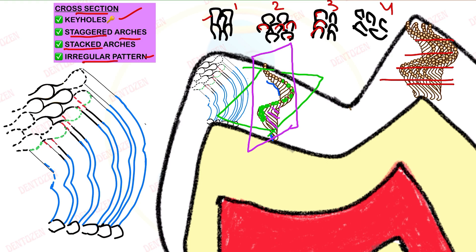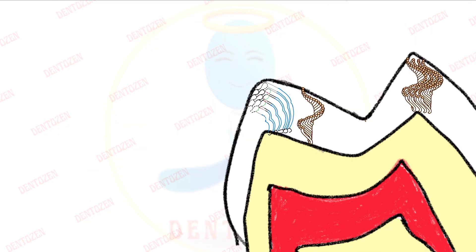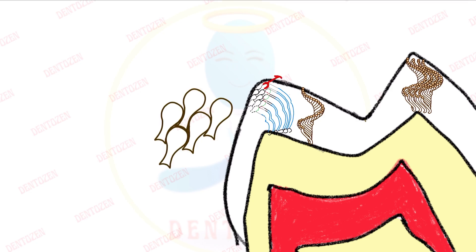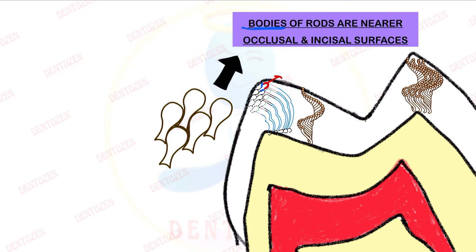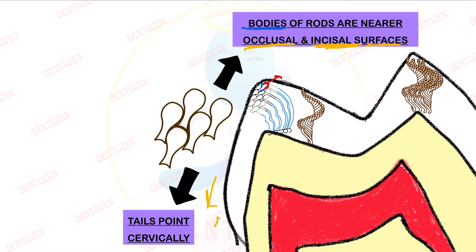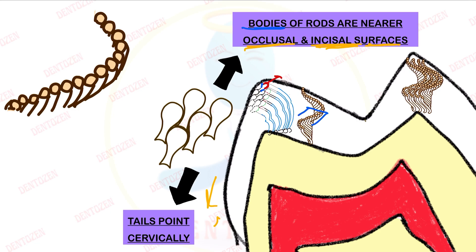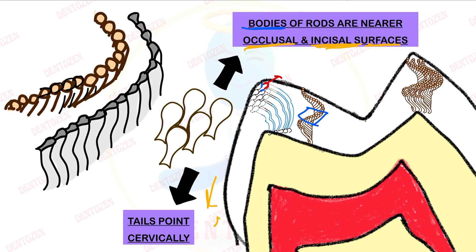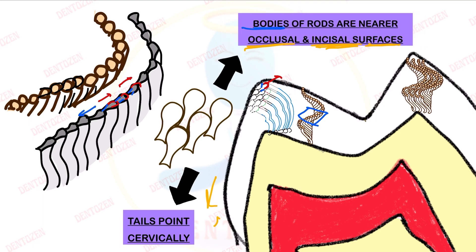Another important thing to know is the orientation of heads and tails inside the enamel. The heads or bodies point towards the occlusal or incisal surfaces — incisal surfaces in the case of incisors. The tails point in the opposite direction, that is, towards the cervical direction. So in the cross section these are the keyhole-shaped enamel rods, and all heads point occlusally while all tails point cervically — these are important viva and exam questions.